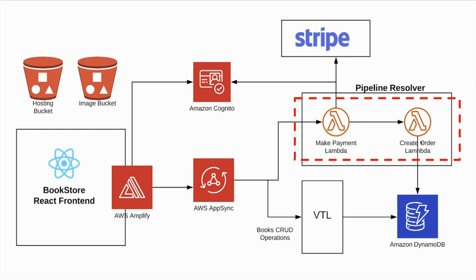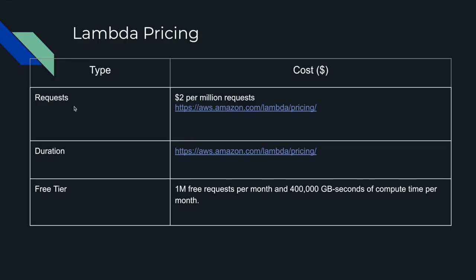We have two functions: the make-payment Lambda and the create-order Lambda. Lambda charges $2 per million requests, so 1 million requests to a Lambda function costs $2. However, there is a monthly free tier that refreshes every month — 1 million requests per month are free of charge. Apart from request prices, you are also charged for duration, counted in GB-seconds.